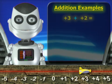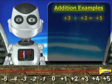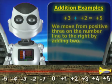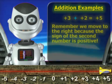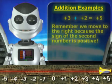Positive three plus positive two equals positive five. We move from positive three on the number line to the right by adding two. Remember, we move to the right because the sign of the second number is positive.